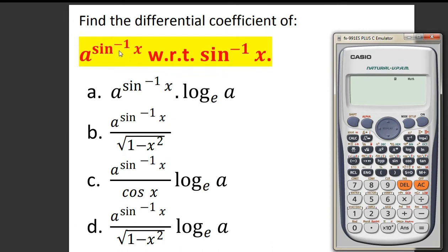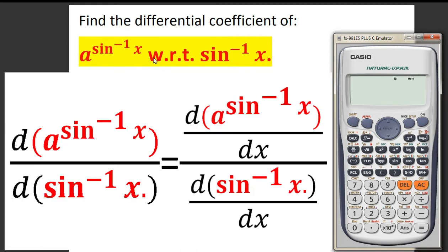We have to first differentiate the first function with respect to x, and that result will be divided by the derivative of the second function with respect to x. That means: derivative of a to the power sin inverse x, divided by derivative of sin inverse x with respect to x — that will be the result.